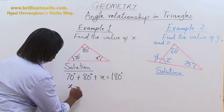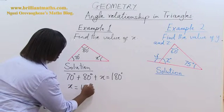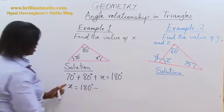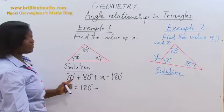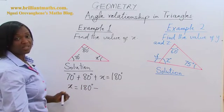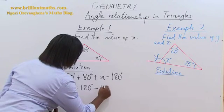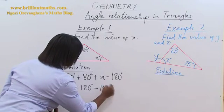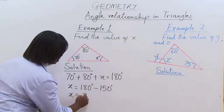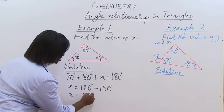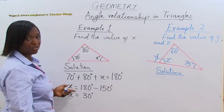X is equal to 180 degrees minus the sum of 70 and 80. And 70 plus 80 is equal to 150. So the value of X is simply 30 degrees. So easy.